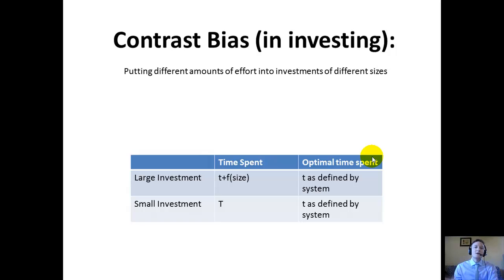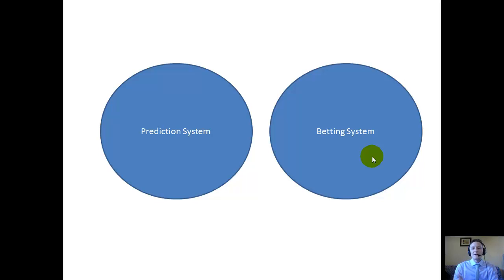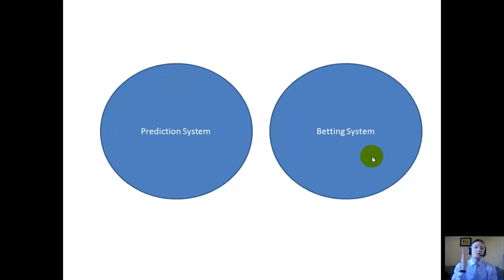I make this differentiation with a Venn diagram: there's a betting system and a prediction system. Your betting system is how you allocate your funds to the investment, whereas your prediction system is how you determine whether that underlying stock, bond, or whatever is going to go up or down — whether it's worth investing. These two should be independent. If they're not independent, if there's some overlap, it means that the size of your investment is affecting your prediction system, which is not something you want to happen.